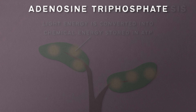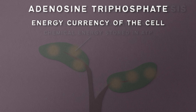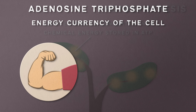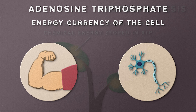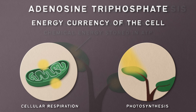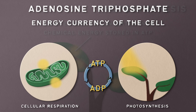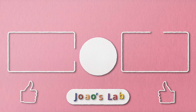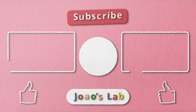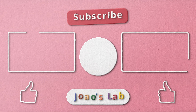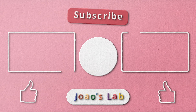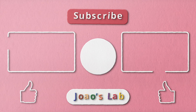In summary, ATP is the energy currency of the cell, crucial for powering everything from muscle contractions to nerve impulses. It's produced through processes like cellular respiration and photosynthesis, and is constantly being recycled in the ATP-ADP cycle to ensure your cells have a ready supply of energy. And that's a wrap on ATP. If you enjoyed this video, hit the like button, subscribe to João's Lab for more videos like this one, and leave a comment below with any questions or topics you'd like us to cover next.